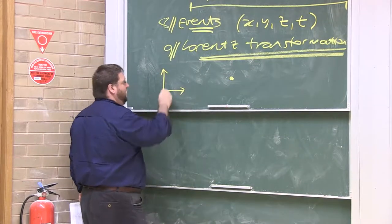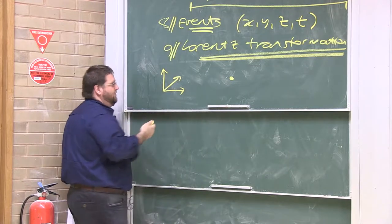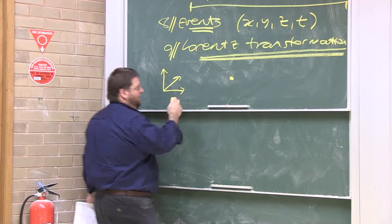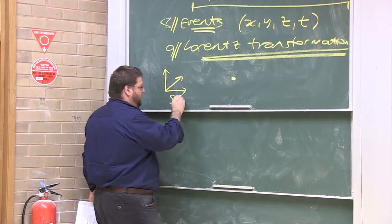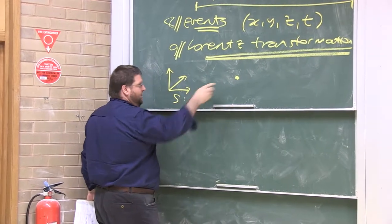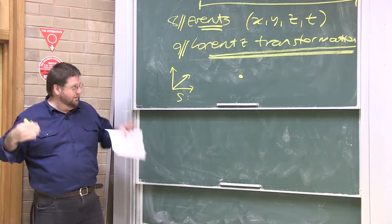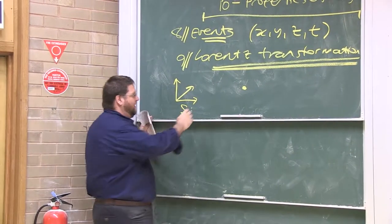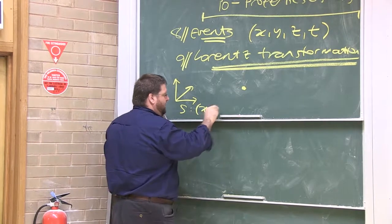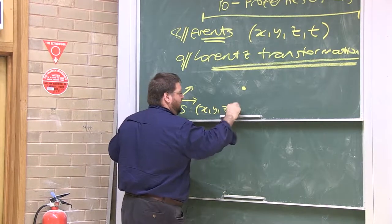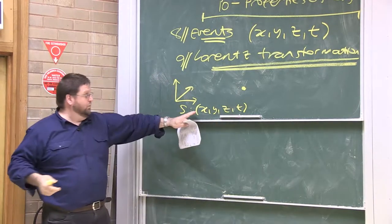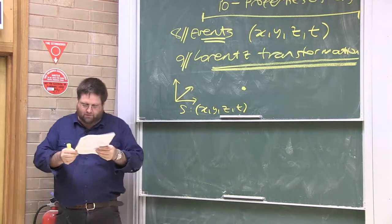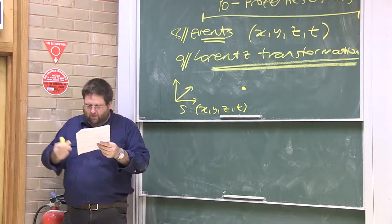We could choose to coordinatise that object with a particular inertial frame of reference — let's call it S. And according to S, that dot, that geometric point that exists in space-time independently of how we choose to coordinatise it, according to some inertial observer S, those would be the four coordinates of this event, of this space-time point, of this dot in space-time.